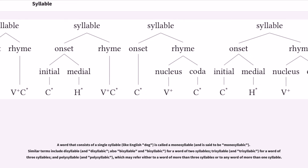A word that consists of a single syllable is called a monosyllable. Similar terms include disyllable for a word of two syllables, trisyllable for a word of three syllables, and polysyllable, which may refer either to a word of more than three syllables or to any word of more than one syllable.